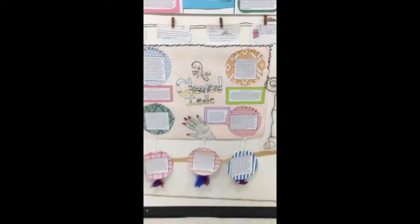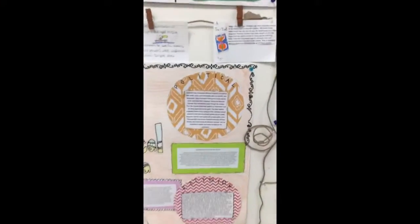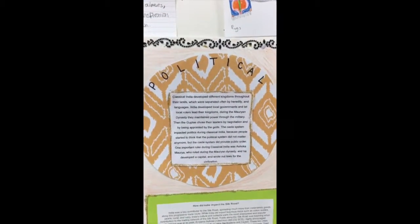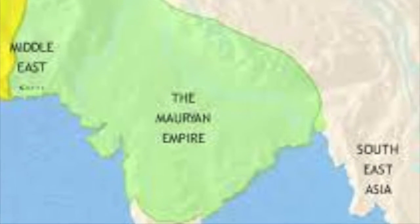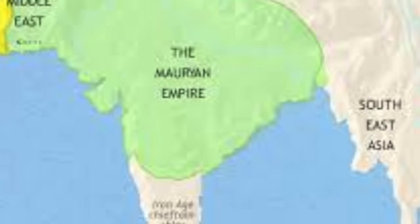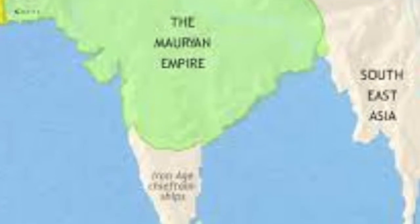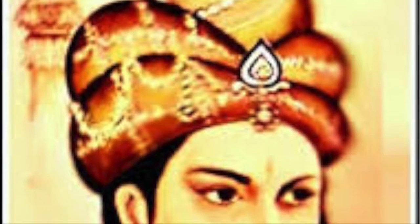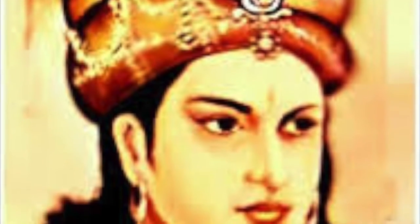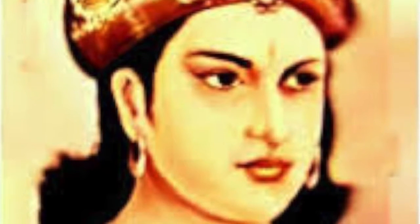Classical India has many kingdoms that have developed throughout the land. India has local governments that local rulers lead. During the Mauryan dynasty, they were able to maintain power through the military. The Guptas chose their leaders by negotiation and their rulers were appointed by the gods. People start to think that the political system doesn't matter anymore just because of the caste system, although the caste system also does provide public order to India.